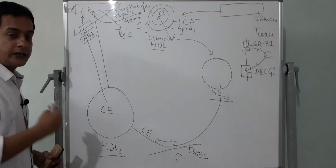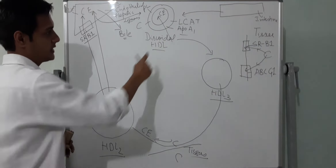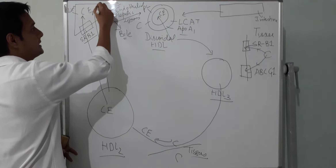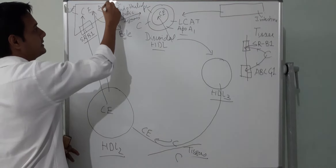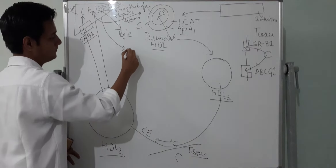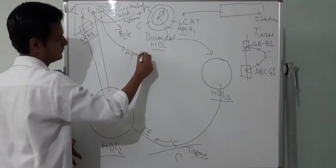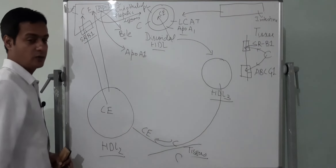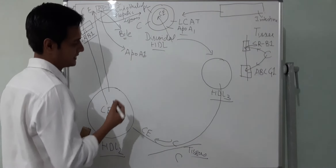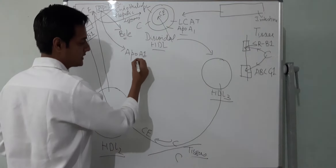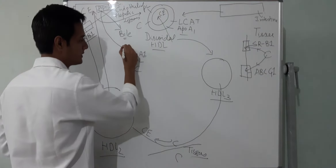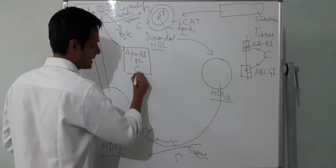During catabolism of HDL2 by endothelial and hepatic lipases, the apoA1 that HDL2 contains is released into the plasma. After associating with a certain amount of phospholipid and cholesterol, this apoA1 is known as pre-beta HDL.